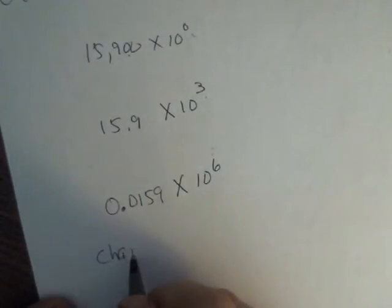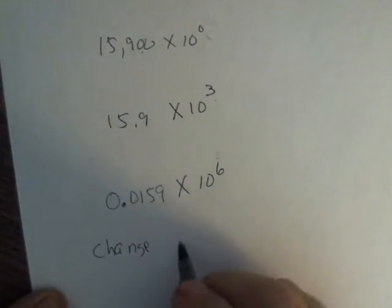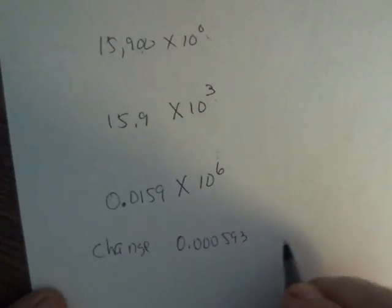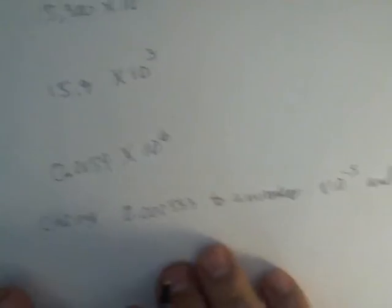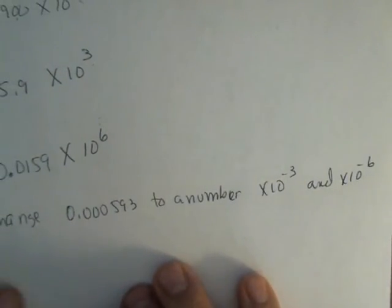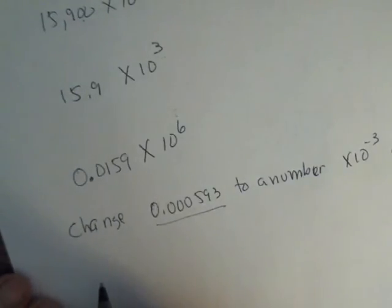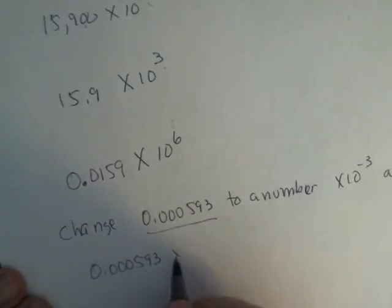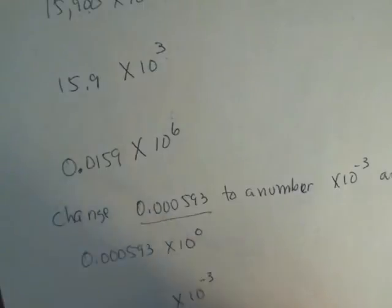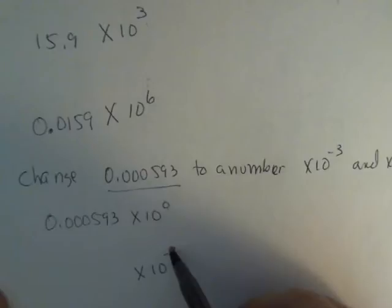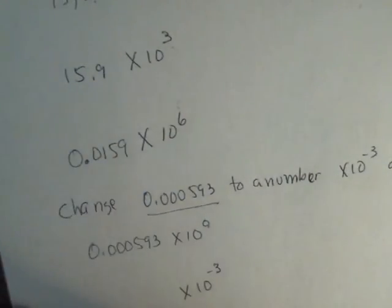All right, how about if I want to change 0.000593 to a number times 10 to the negative 3rd and times 10 to the negative 6th? So we are assuming that this number here is times 10 to the 0 power. To me, I think that's the easiest way to just write it out. I see this missed all the time. Just write it out. Underneath it, say I'm going to times 10 to the negative 3rd. So since we are subtracting from 0 to get negative 3, now we move the decimal to the right in the number we start with.